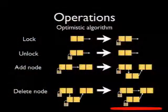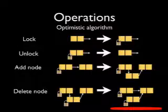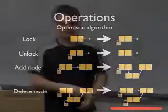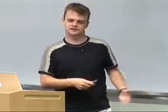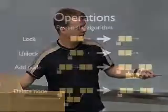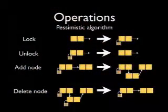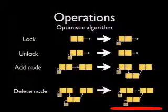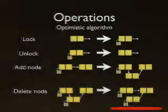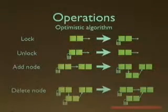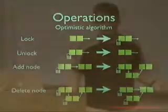For the optimistic version, it's all pretty much the same. But when we remove the node, we just leave it there — we don't get rid of it. Here it just kind of disappears, we don't care. But in the optimistic case we have to leave it there because other people could be looking at it at the moment.